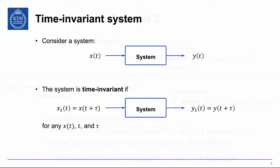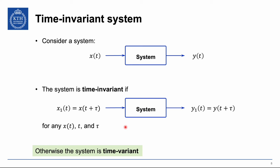Now we have a time invariant system. This is a system that takes an input and provides an output. If we consider another input x1 of t which is a shifted version x of t plus tau for some constant tau, then the system should provide a y1 of t which is an equally time-shifted version of the original output signal. If this is the case for any input signal, any t, and any tau, then the system is time invariant. Otherwise it is called time variant or time varying.